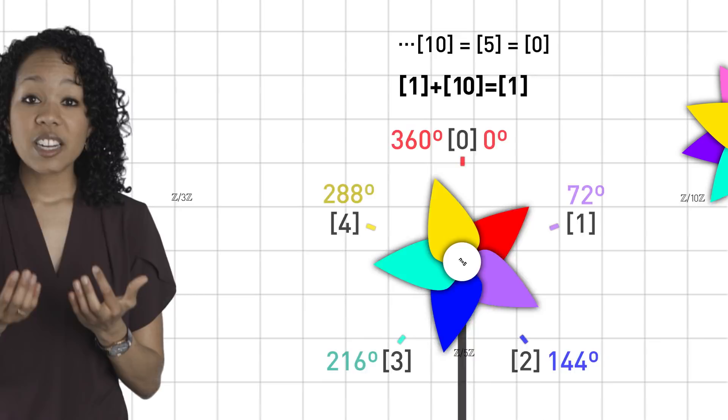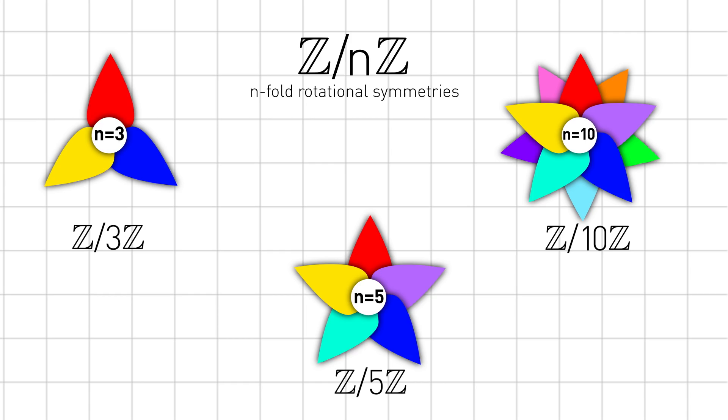And there's nothing special about the number 5. For any positive integer n, the quotient z mod nz encodes n-fold rotational symmetries. And the set nz, the multiples of n, behaves just like 0. Whether we rotate by 0 degrees or by one or more full revolutions, the effect is the same.